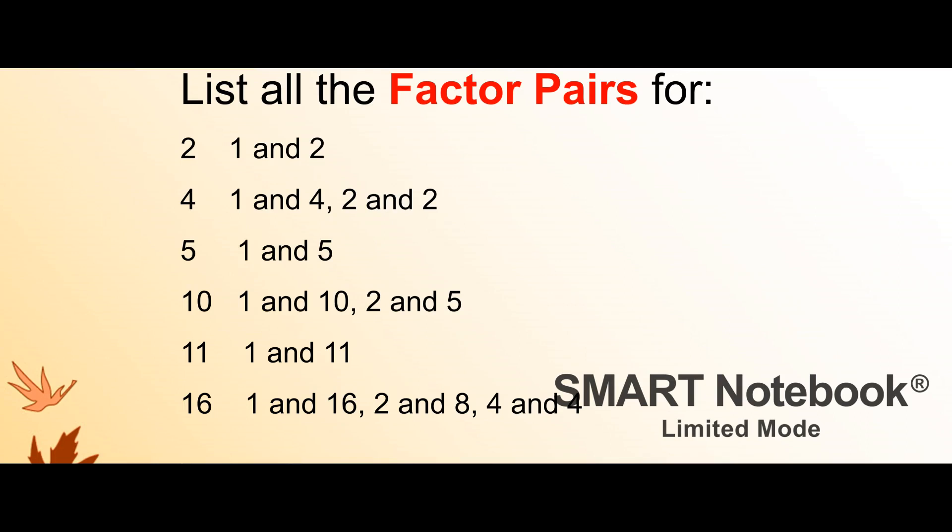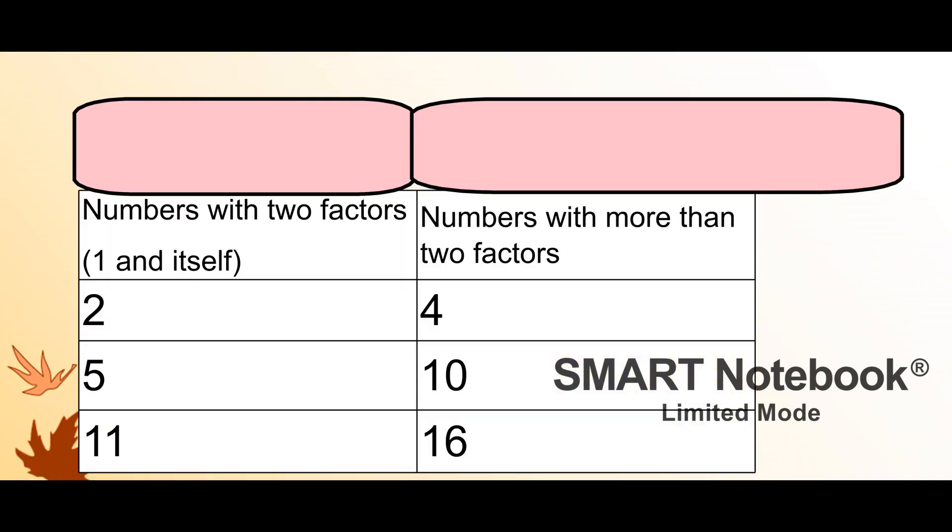Do you notice anything about the factor pairs for 2, 5, and 11? For 2, 5, and 11, they only have the two factors, 1 and themselves.